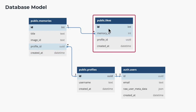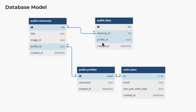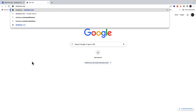The likes table contains details of each memory that we like and who liked it. There's a foreign key constraint on the memory ID field which points to the ID of the memory that was liked, and also has a profile ID pointing to the user liking the memory. All right, so in a new tab we're going to go to database.new which will bring us to the create a new project screen.